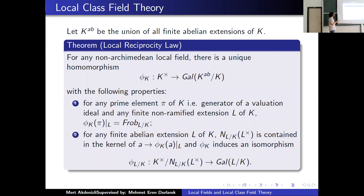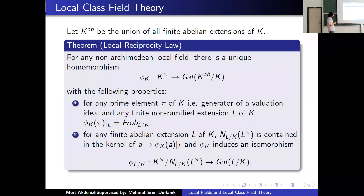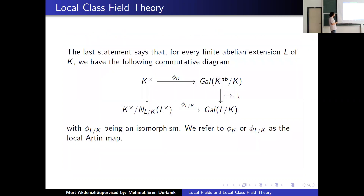Let K^ab be the union of all finite abelian extensions of K. One of the famous theorems of local class field theory — the local reciprocity law — states that for any non-Archimedean local field, there is a unique homomorphism from K* to Gal(K^ab / K) with the following property: if you take a prime element and look at its image, and if L is an unramified extension of K, restricting to L gives the Frobenius element. Moreover, the norm subgroup is contained in the kernel, so it induces an isomorphism. To compute the Galois group, you just need to compute K*/N(L*). The last statement says that this diagram commutes, where phi_K and phi_{L/K} are called the local Artin maps, and phi_{L/K} is an isomorphism.